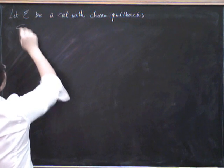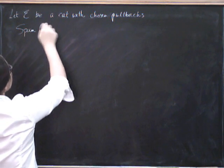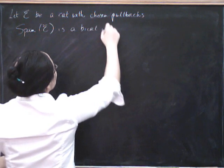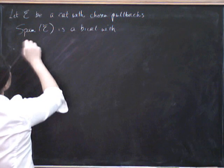So let's see, so span E is a bi-category with the zero cells of the objects of E.